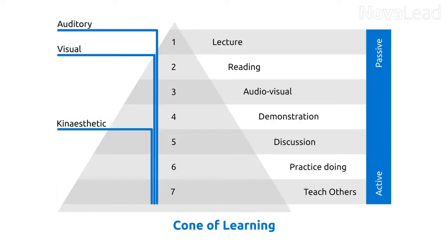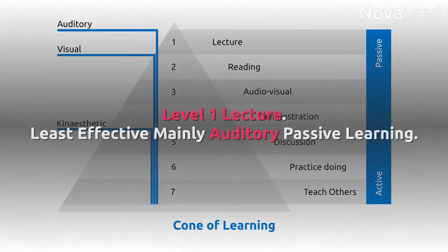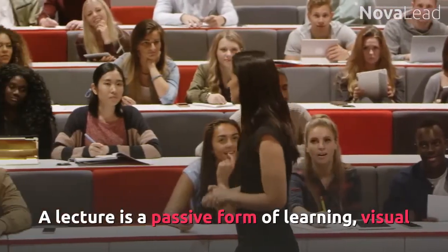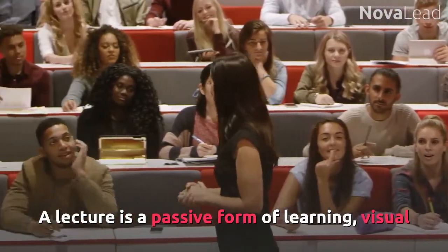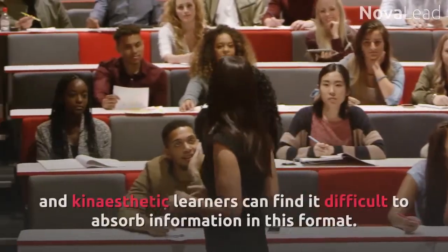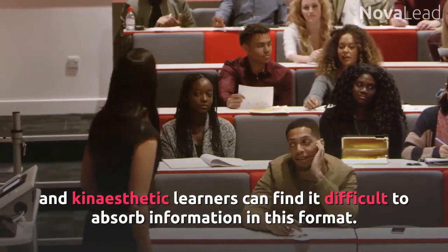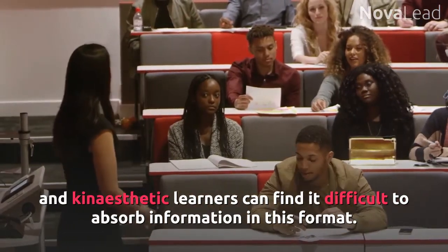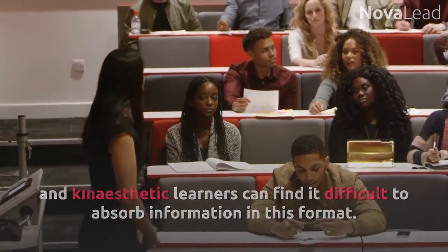Edgar Dale's Cone updated for the modern world. Level 1 – Lecture. Least effective, mainly auditory, passive learning. A lecture is a passive form of learning. Visual and kinesthetic learners can find it difficult to absorb information in this format.